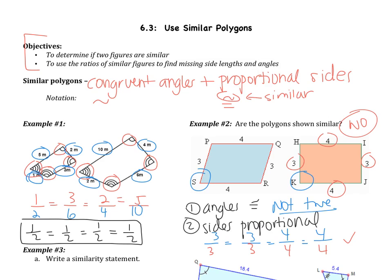Looking at example 1 where we do have similar figures — similar figures are as if you took a figure and blew it up or shrunk it. I took the first figure and blew it up to get the second figure. That's why the angles are congruent and the sides are proportional. All the sides change by the same factor but the angles stay the same. So similar figures: all the angles are congruent and all the sides are proportional.